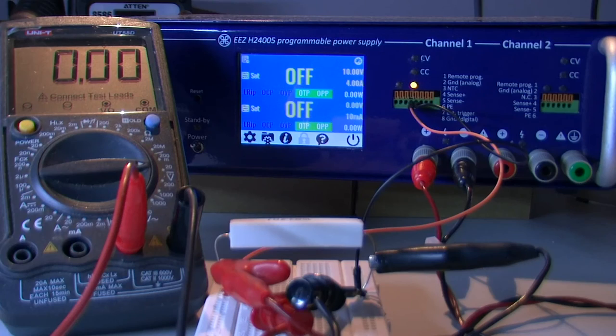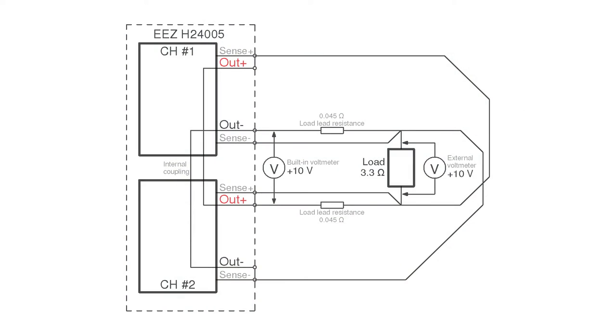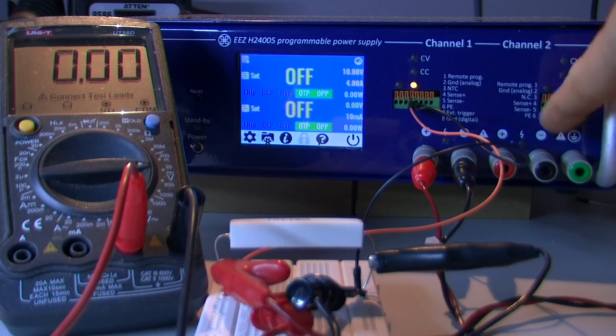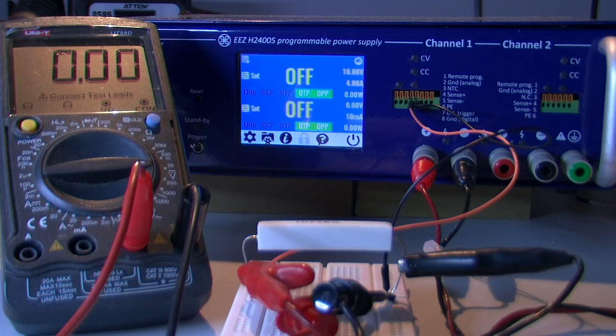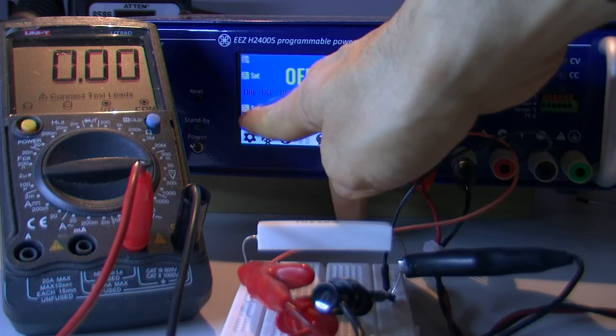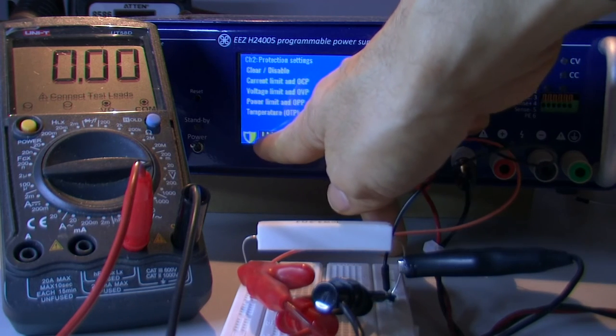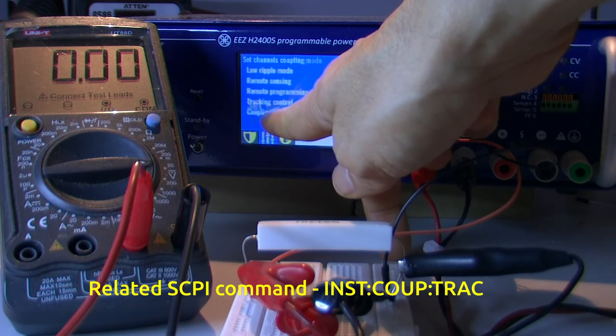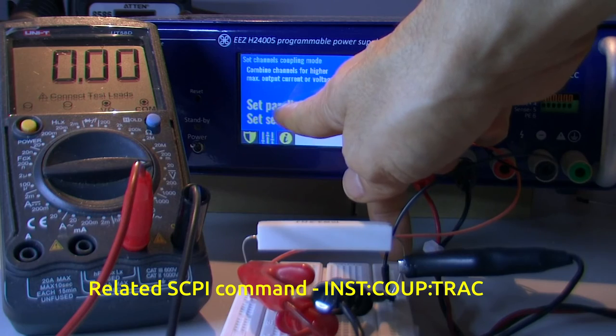We can do the same thing when channels are coupled in parallel when output current could be up to 10 amps. And in that case to compensate those losses we need to use remote sensing on the second channel too. As a first step we need to enter coupling mode in parallel.